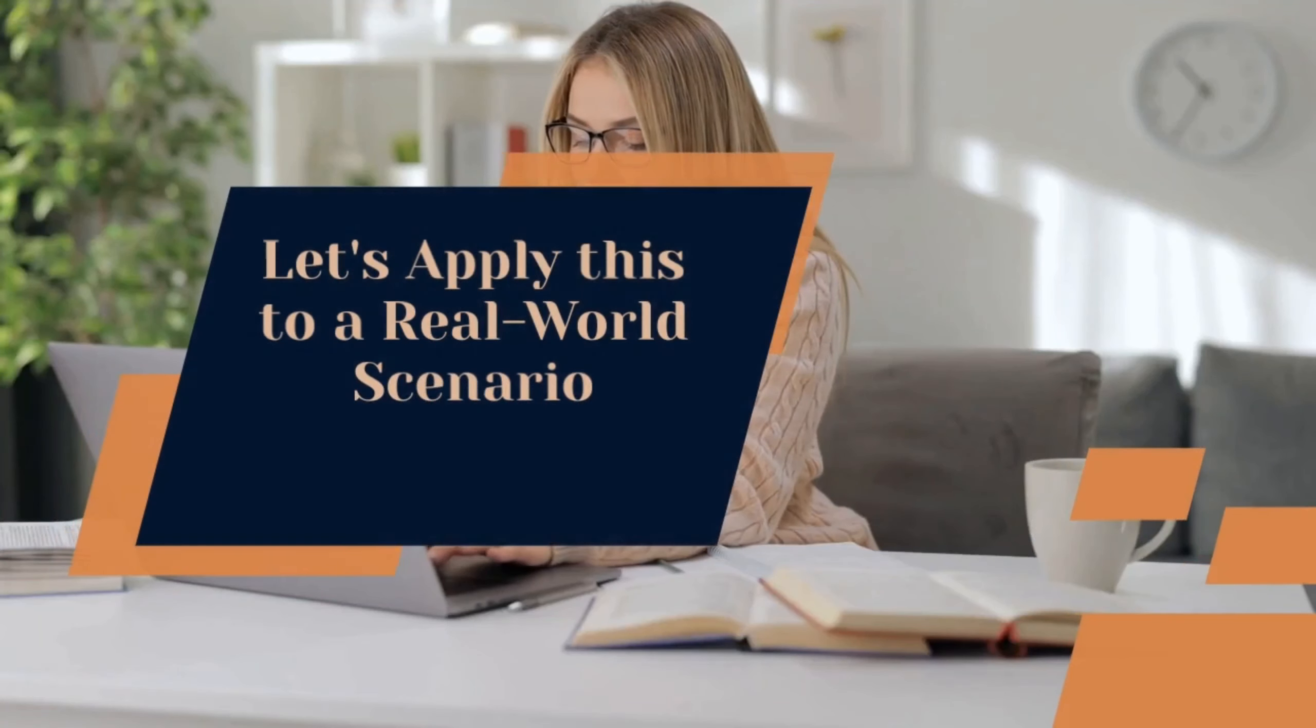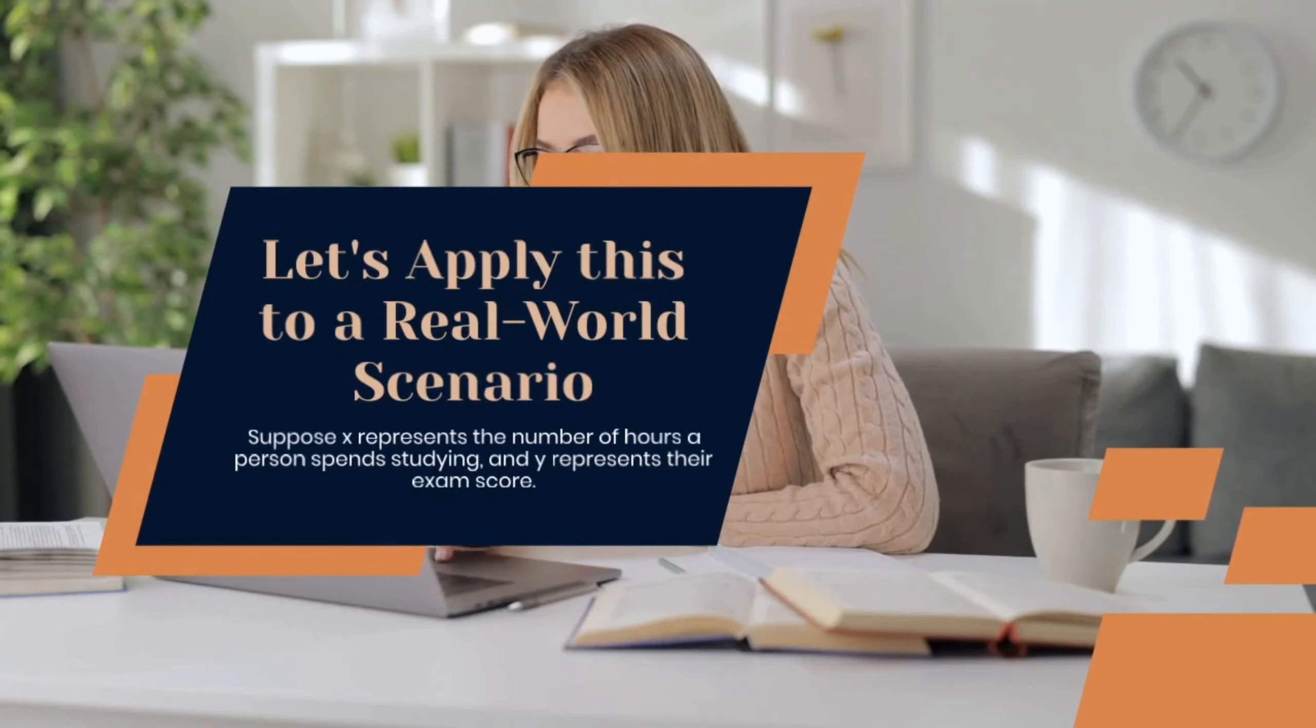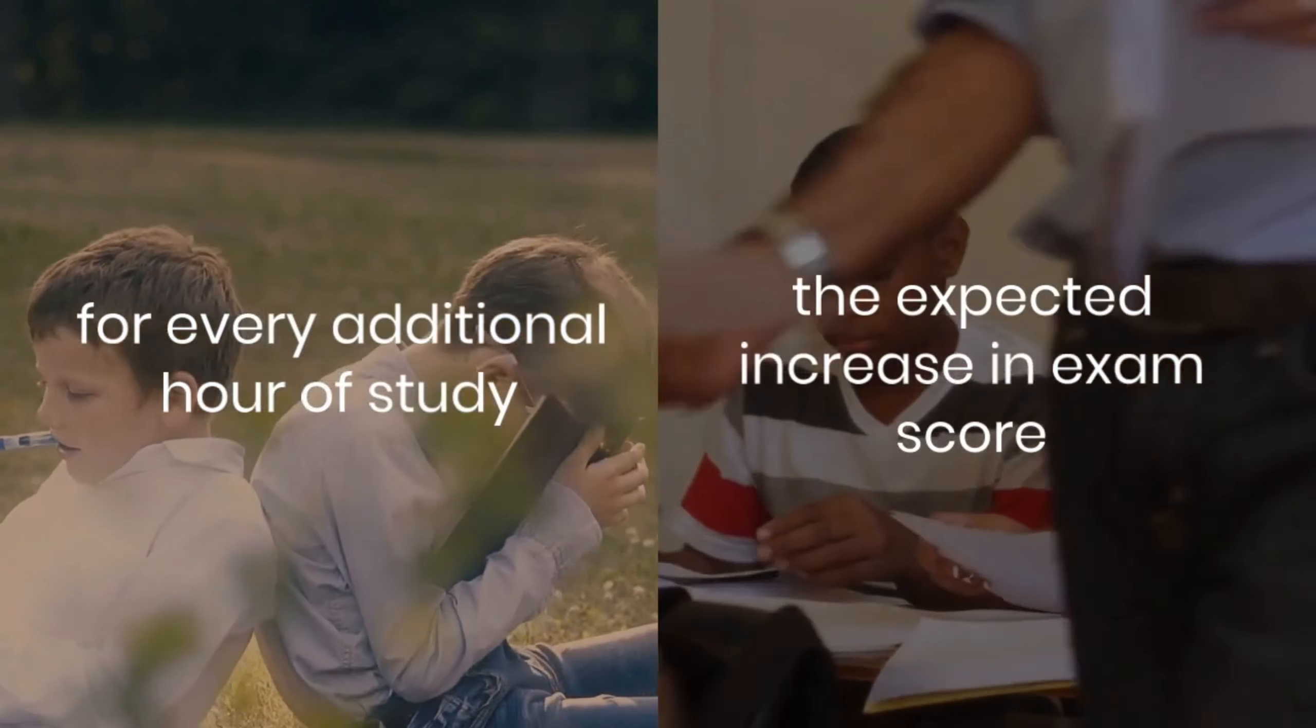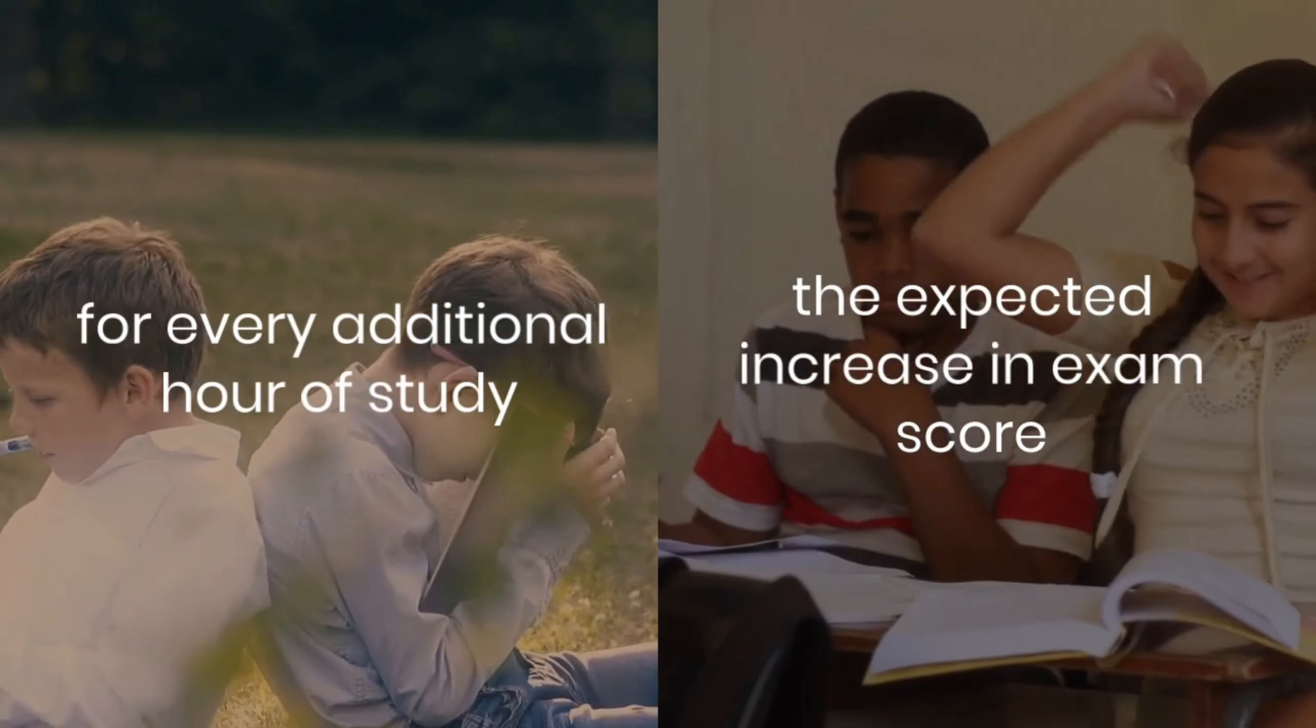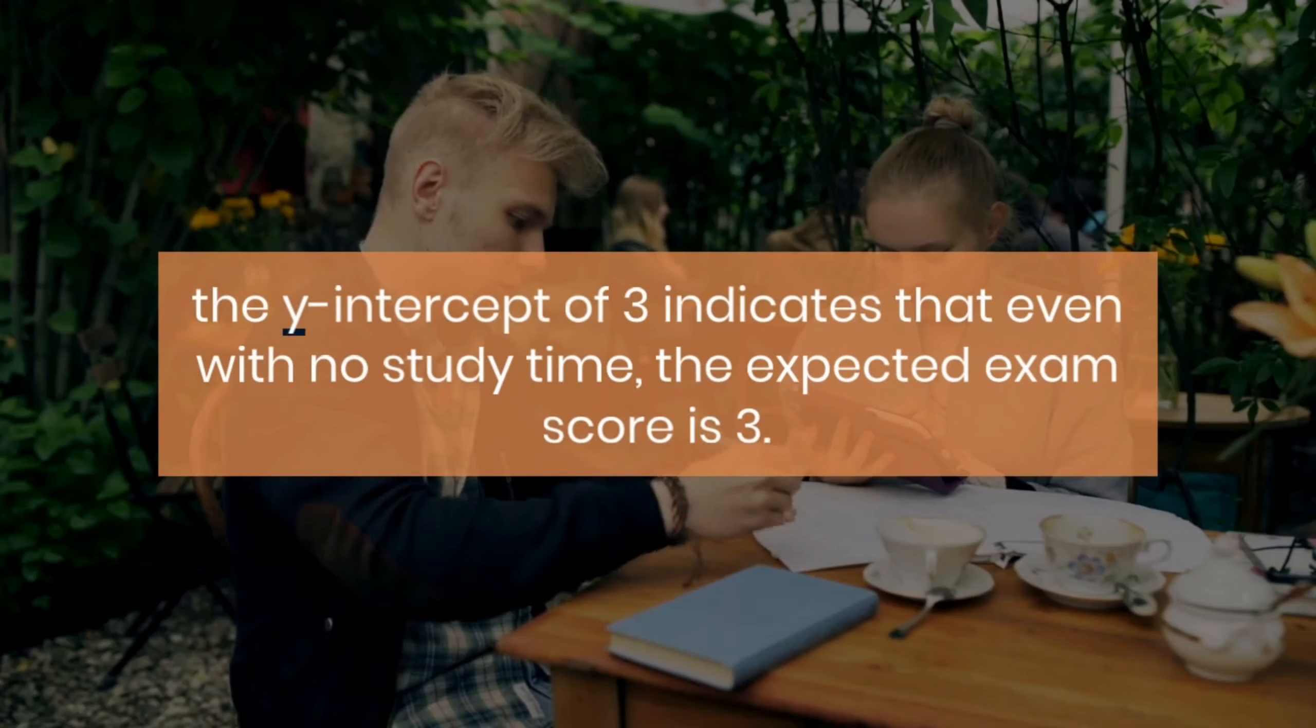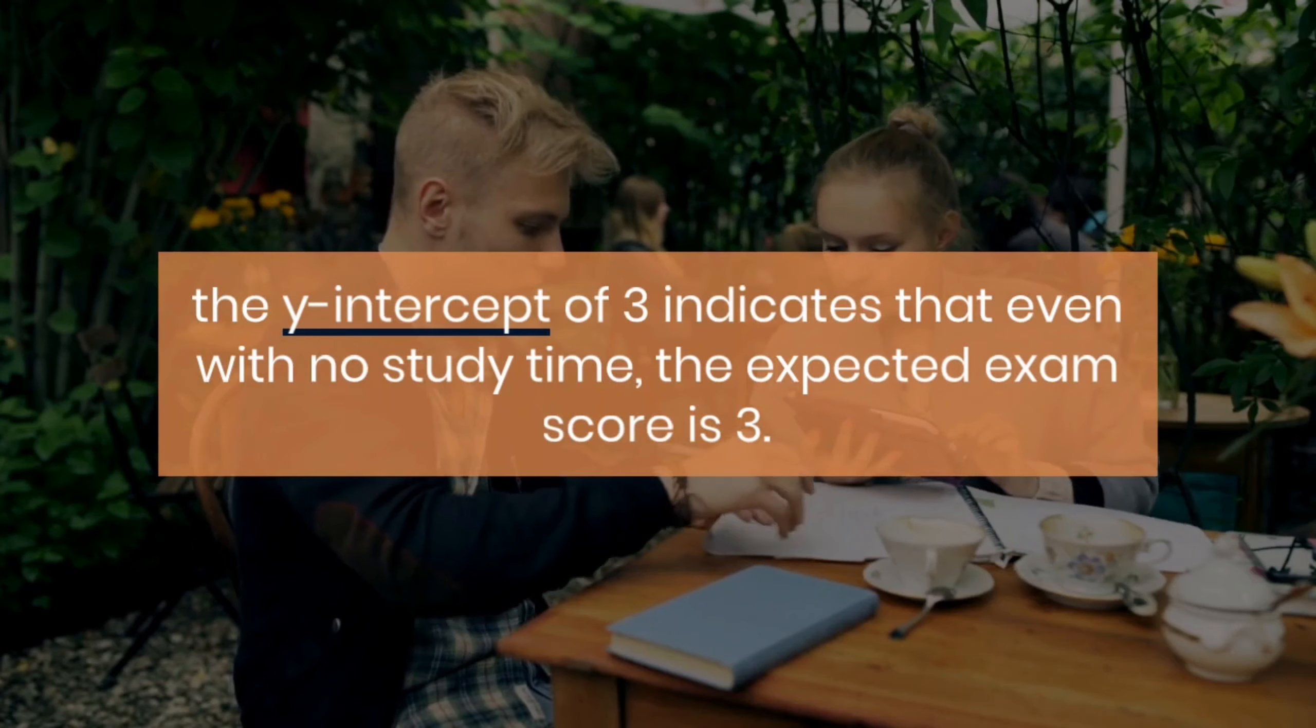Let's apply this to a real-world scenario. Suppose x represents the number of hours a person spends studying, and y represents their exam score. With the equation y = 2x + 3, the slope suggests that for every additional hour of study, the expected increase in exam score is 2 points. The y-intercept of 3 indicates that even with no study time, the expected exam score is 3.